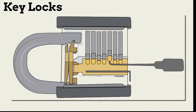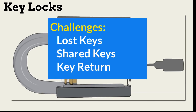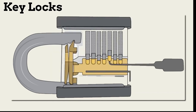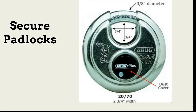Another problem with key locks is key management. Keys are lost and then found by those who shouldn't have them. Rekeying a lock requires making physical changes to the locks, if possible, and the distribution of new keys. Keys are often shared with employees who should not have them to expedite a business process, and are often not returned when an employee leaves employment. High-security padlocks do exist that are resistant to cutting, breaking, or picking. This is an example of a discus lock that might be enough when padlock access is needed.